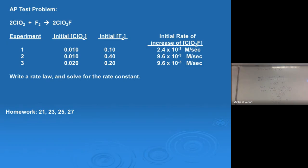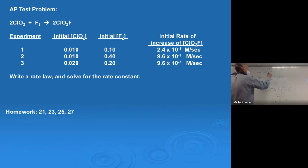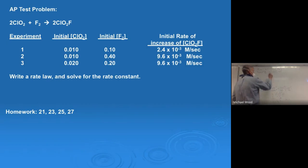It's first order in ClO2, first order in F2, and second order overall. There's our rate law. Now to figure out the rate constant — in period two I chose experiment one; here I'll choose experiment two. It doesn't matter which one. So I'm solving for k: 9.6 × 10⁻³ M/s equals k times [ClO2] = 0.010 to the first, times [F2] = 0.40 to the first.